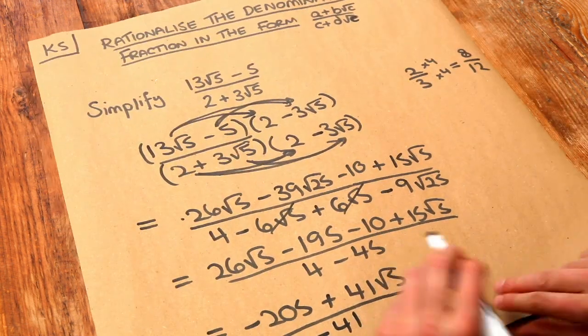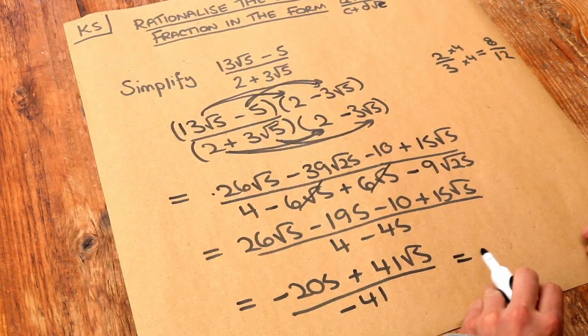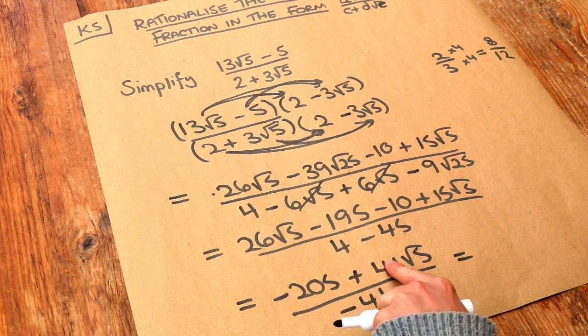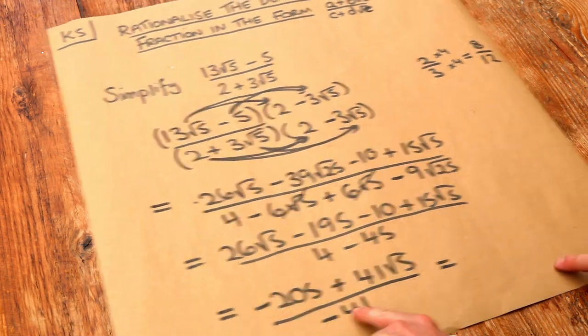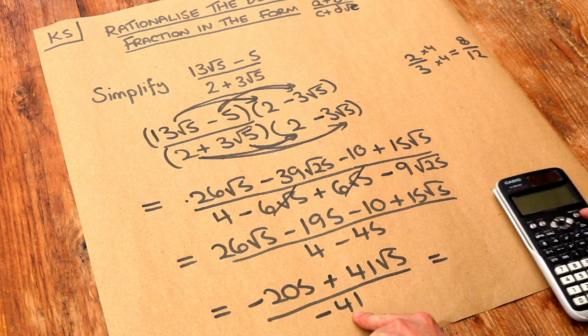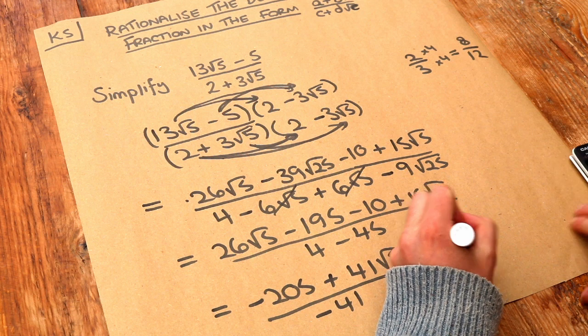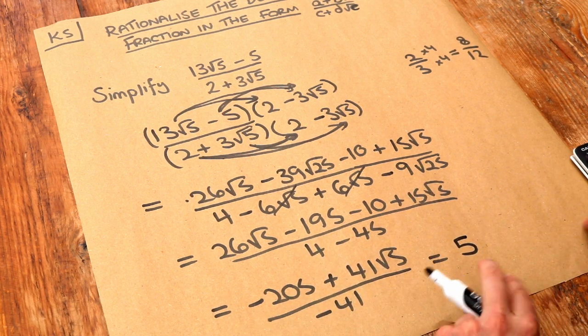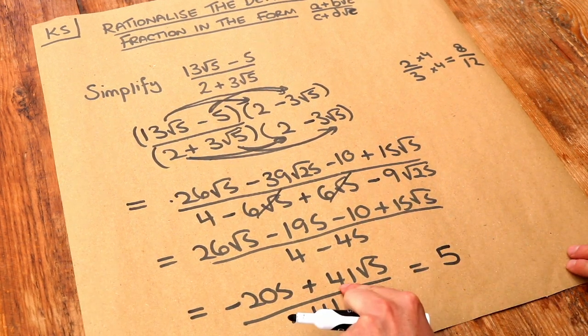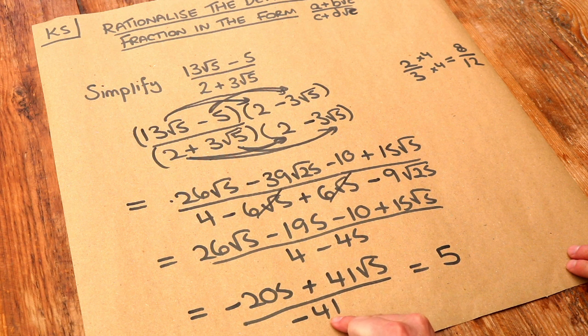Oh, now this looks like it might simplify. Because we could divide each of these things at the top by the minus 41. If you divide the minus 205 by minus 41, it divides exactly. You get positive 5. Negative divided by negative is positive.